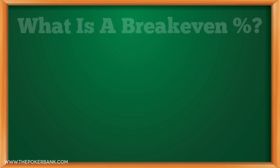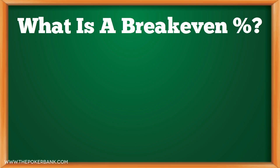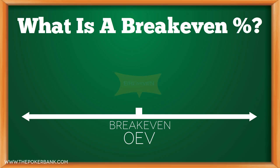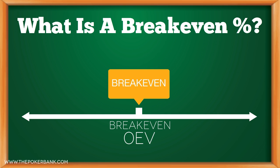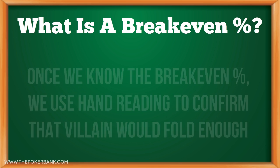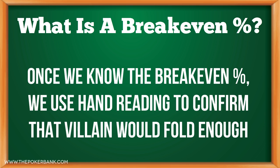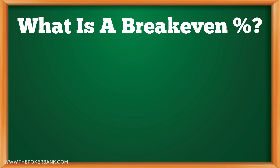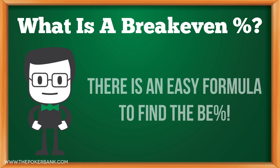First, what exactly is a breakeven percentage? This is the mathematical way of saying if a play works this amount it's breakeven, or 0 EV; if it works less than that it's negative EV, and if it works more than that it's plus EV. Once we know the breakeven percentage necessary to run a bluff, we can use our hand-reading skills to estimate if the bluff will work often enough to make it profitable. The good news, if you are a math nerd like me, is that the formula is incredibly simple.